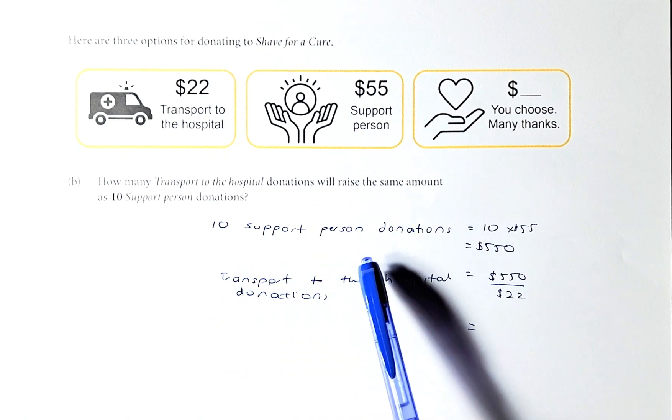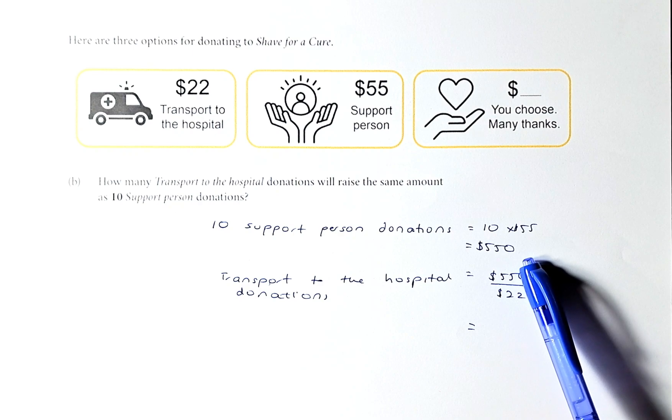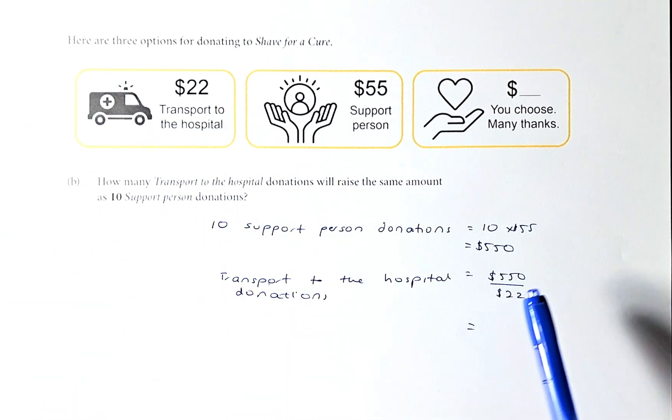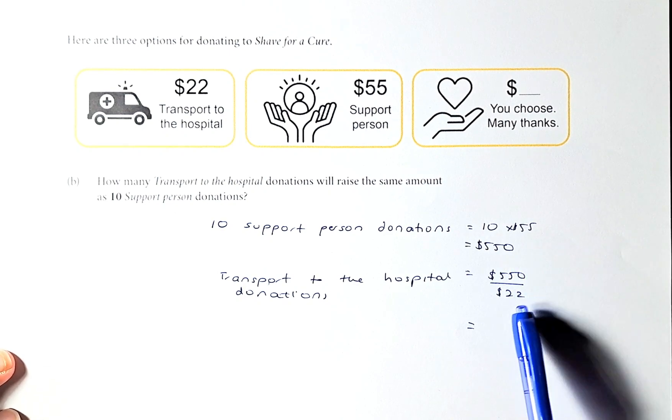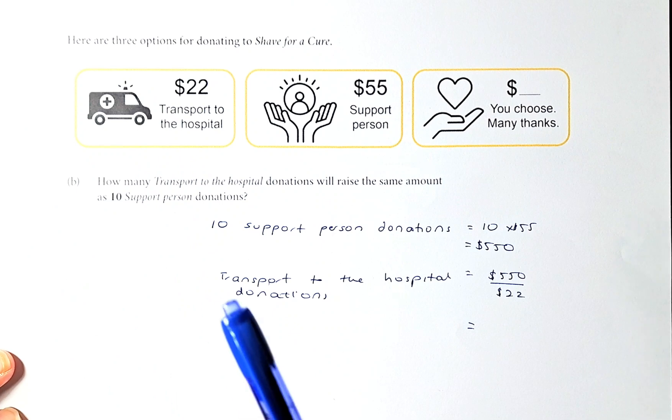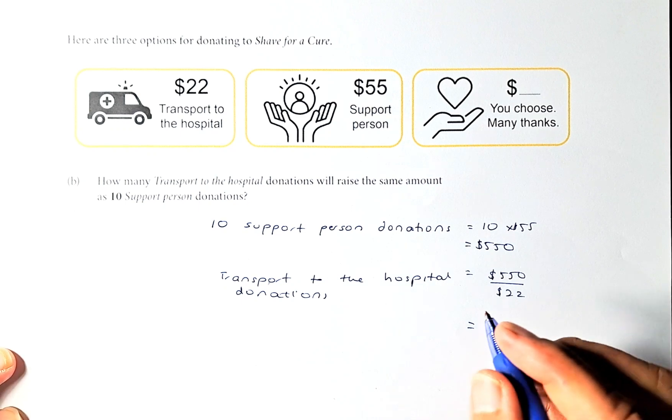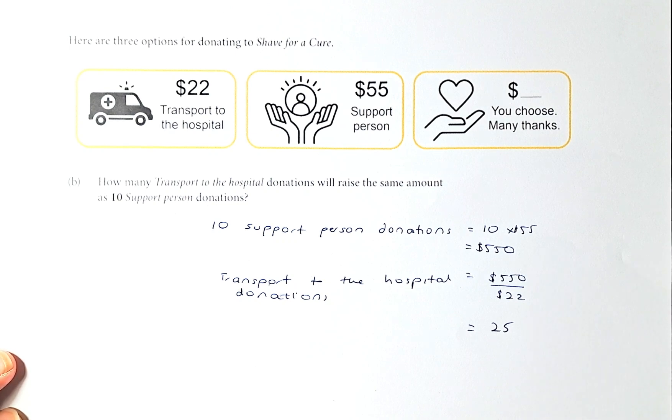So we're going to calculate 10 support person donations. 10 times 55 will give us 550. To calculate how many of that is equivalent to the transport to the hospital, we just take the $550 which is the amount of 10 support person and divide by 22 because 1 transport to the hospital donation is $22. So we take 550 divided by 22 and I've done the calculation, it's going to be 25. So there will be 25 of the transport to hospital donations that's equivalent to $550.